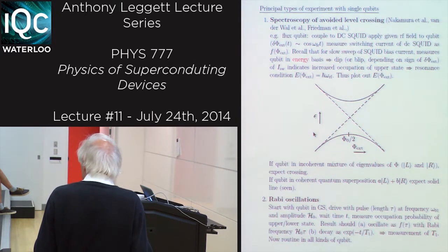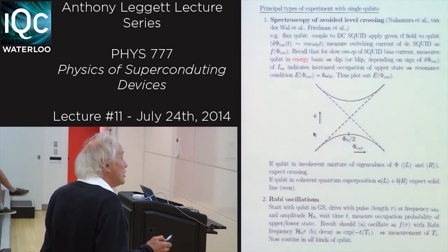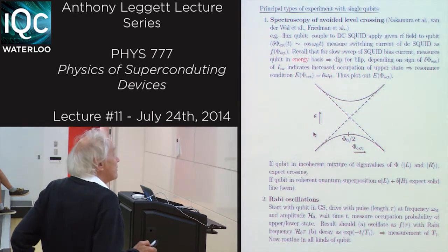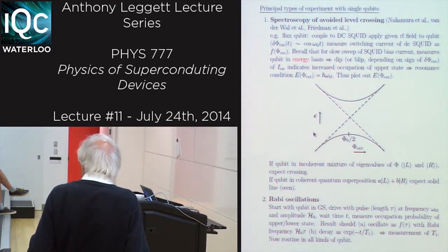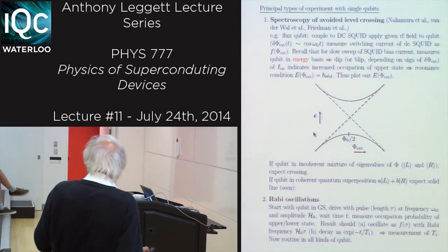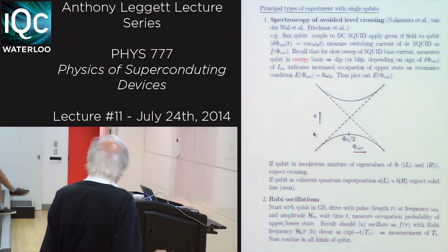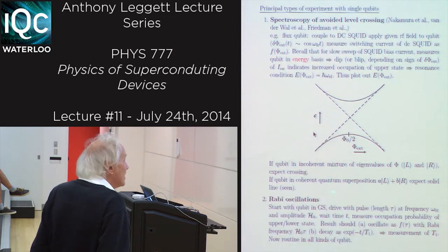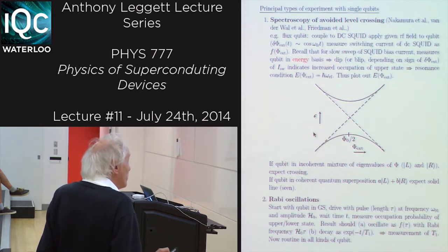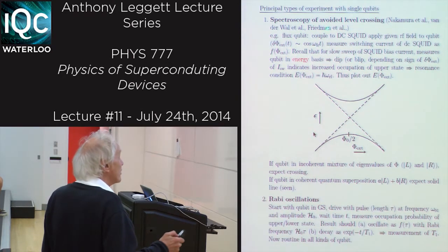The DC SQUID was really a very inefficient measuring device — certainly not single shot. You had to do something like 10^4 repetitions to get meaningful statistics, so this is very much a weak measurement situation. Having done that, one could plot out what the energy looks like as a function of the externally applied flux. If the qubit were always in an incoherent mixture of the left and right well states, you'd expect crossing lines. If it's in a coherent quantum superposition, you'd expect the standard level repulsion. Both van der Waal and Friedman, and the Nakamura group, did indeed see the solid lines — evidence for coherent superposition.